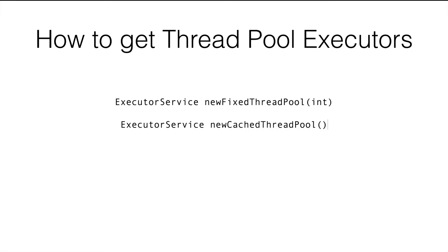The second method is newCachedThreadPool. Here we don't pass an integer number, meaning we don't pre-define the number of threads. The executor service creates threads on demand — as soon as it receives a task, it creates a thread to handle it. If multiple tasks arrive in parallel before one finishes, it creates additional threads. Once a task finishes, the thread stays around for 60 seconds. If no new tasks arrive in that time, the thread is discarded and its resources are reclaimed. But if a task arrives within 60 seconds, the executor service reuses the existing thread.